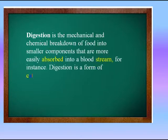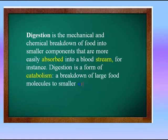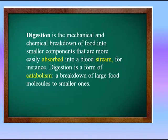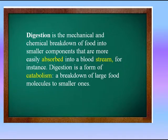Digestion is the mechanical and chemical breakdown of food into smaller components that are more easily absorbed into the bloodstream. Digestion is a form of catabolism, which is the breakdown of large food molecules into smaller ones. Digestion occurs with the help of several body fluids, particularly digestive juices, that are made up of compounds such as saliva, mucus, enzymes, hydrochloric acid, bicarbonate, and bile.